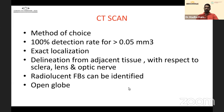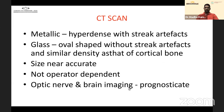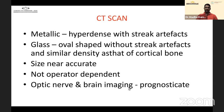Radiolucent foreign bodies can be identified on CT, which is difficult with X-ray or B-scan, and CT can be performed in open globe. On CT, metallic foreign bodies show as hyperdense with streak artifacts; glass foreign bodies show an oval shape, no streak artifacts, and density similar to cortical bone. Size is near accurate, and it is not operator-dependent.